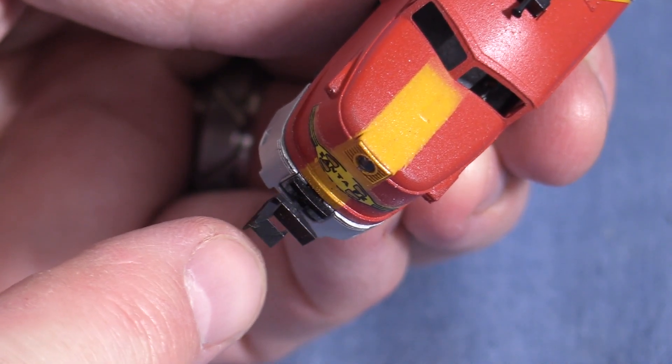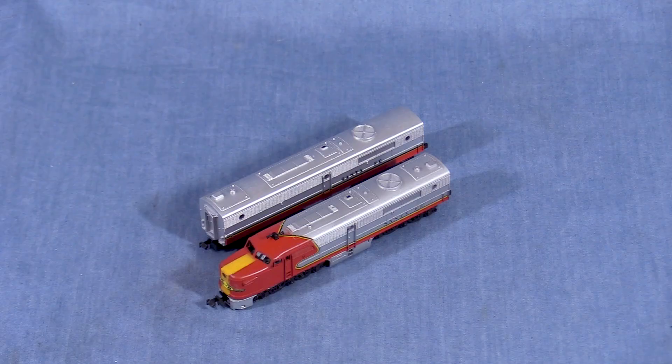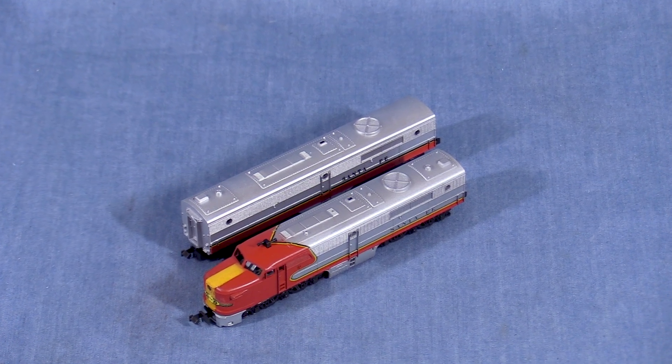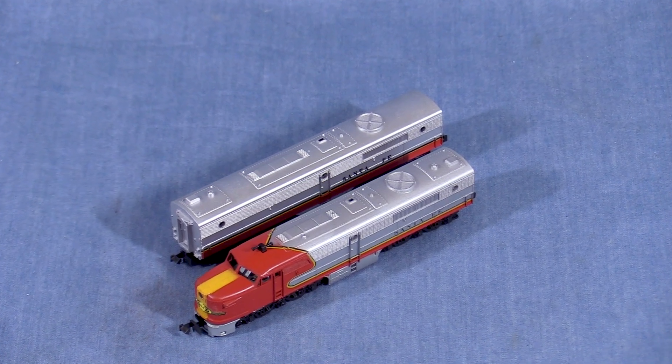It still runs well, but it has the old-school Arnold Rapido couplers on it. My cousin got some N-Scale trains for his son, but they have knuckle couplers. I told him I'd swap the couplers on this A and B unit set.